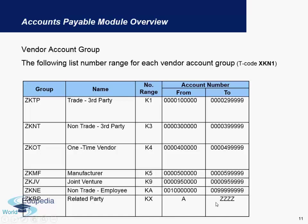You can also have number ranges not just in numbers but also in letters, meaning you can have a vendor called Z001 or V112. This is possible when the account number range is alphanumeric, as shown in the last row. Let us now go to SAP to check how vendor account groups are created and how they are assigned to different number ranges.